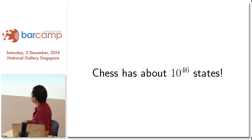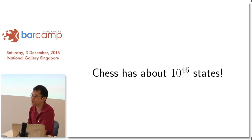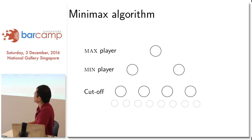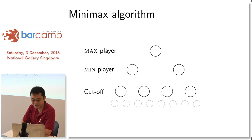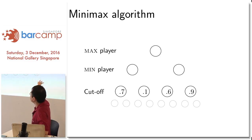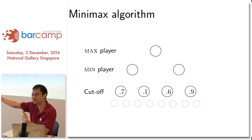The problem in practice is that the future moves number in the millions and millions. You cannot practically figure out the best possible move because the search space is very large — on the order of 10 to the 46. So there's a kind of trick we call a heuristic. We cannot expand all the way, so we draw up to maybe three levels — looking ahead two steps: your turn, my turn, your turn.